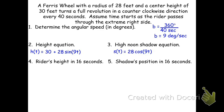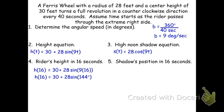Now we find the rider's height and shadow position 16 seconds into the ride. For h(16), we substitute t = 16: h(16) = 30 + 28·sin(9 × 16) = 30 + 28·sin(144°). Making sure the calculator is in degree mode, we get a height of approximately 46.46 feet.